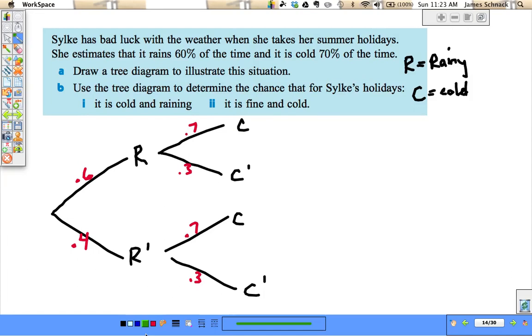Now it says use the tree diagram. Probability that it's cold and raining. So cold and raining, that would be the top branch. It's raining and it's cold. So 0.6 times 0.7, 42% of the time.